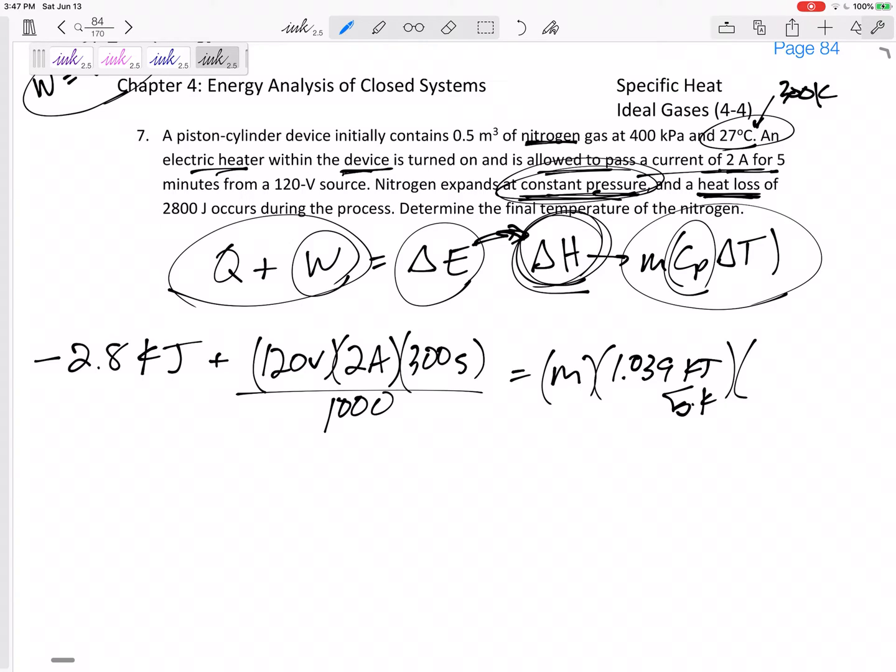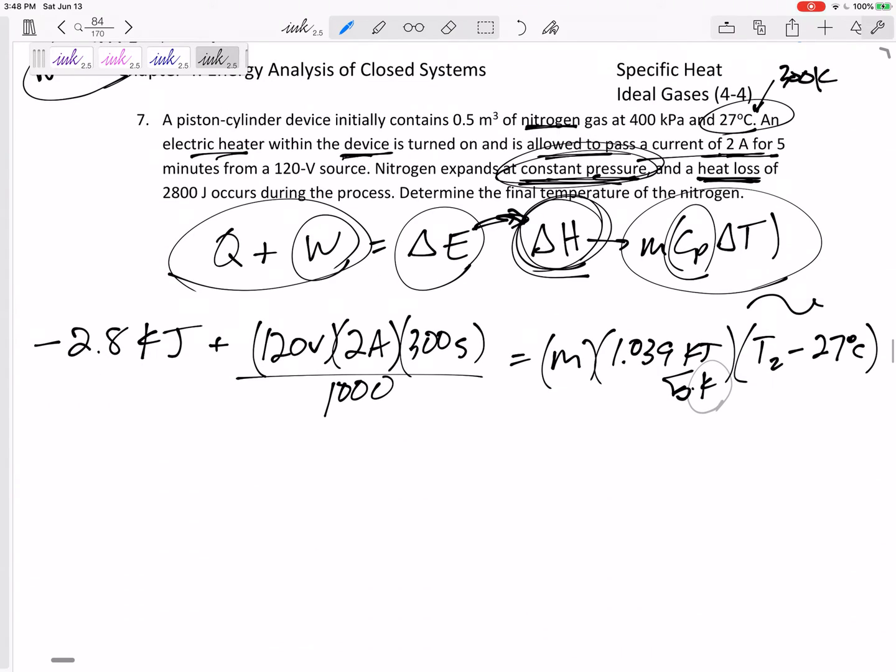So here we go: 1.039 kilojoules per kilogram K times delta T. You could - I could just put delta T right there, or maybe go ahead and say T2 minus 27 degrees C. Do you see how I'm leaving 27 degrees C even though this says kelvin? Because this is a change in temperature. As long as both of those temperatures are in Celsius, it doesn't matter if both of them are in Celsius or both of them are in kelvin - it's the same change in temperature.